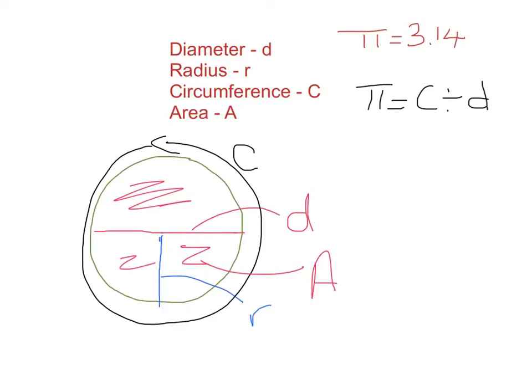Now we know what each letter represents, so I'm going to give you the basic formulas you'll use through this unit. These are formulas we've already discussed in class, just for a quick review. The formula for circumference: capital C equals pi times the diameter.